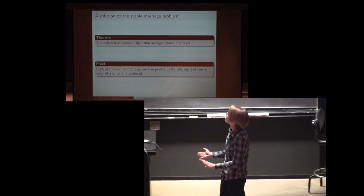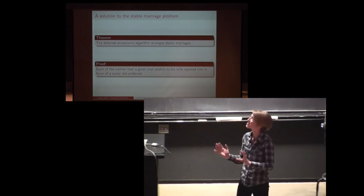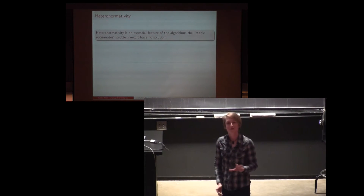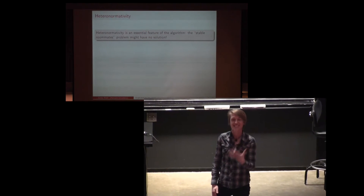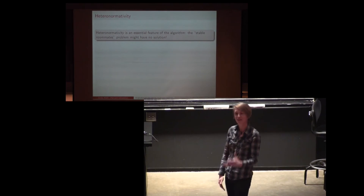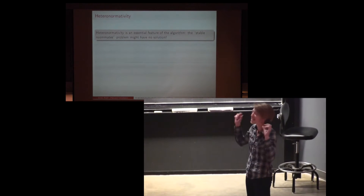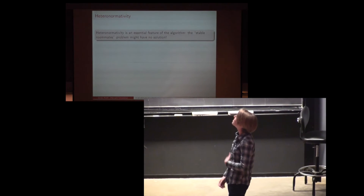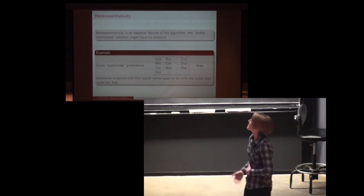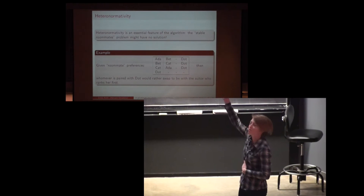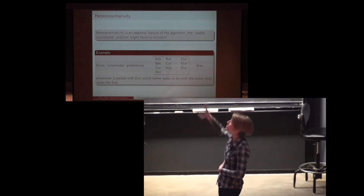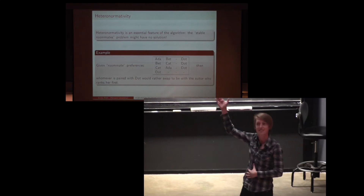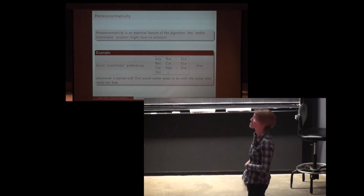I'd like to comment on the heteronormativity of this framework. It's not just that this paper was written in 1962 — it's actually an essential feature of the algorithm. Indeed, the stable roommate's problem doesn't necessarily have a solution. To illustrate, we can imagine four women with the preferences listed here. I'll leave it as an exercise to see that whoever is paired with Dot is going to create an instability.